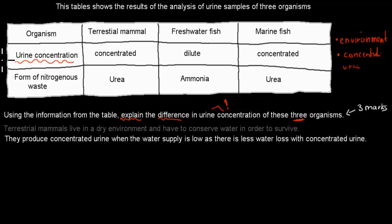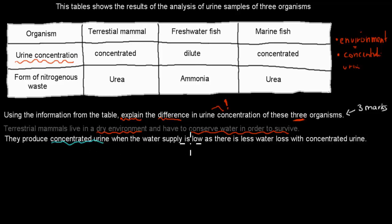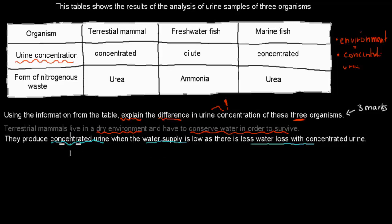For terrestrial mammals: they live in a dry environment, so they have to conserve water in order to survive. Their adaptation is that they produce concentrated urine when water supply is low, as there is less water loss with concentrated urine. If we have too much water we produce dilute urine, but in a dry or dehydrated state we produce concentrated urine. This explanation gets you one mark out of three.